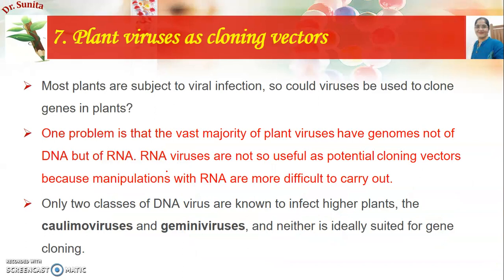Next are plant viruses as cloning vectors. There are various viral infections in plants, and these can also be used for cloning genes in plants. However, the major problem is that the majority of plant viruses are RNA viruses, not DNA viruses. RNA viruses are not very useful as cloning vectors because the required molecular manipulations are difficult to carry out with RNA. Two classes of DNA viruses are mostly known for higher plants: caulimoviruses and geminiviruses, but neither is ideally suited for gene cloning.